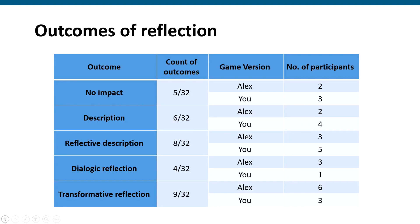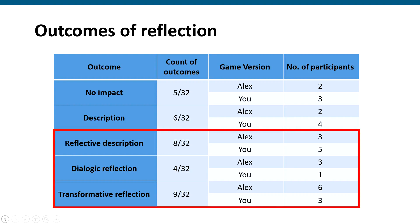Looking at the outcomes of reflection — the key ones are highlighted in red. According to Fleck and Fitzpatrick's hierarchical framework, levels of reflection increase in complexity and depth as you go higher. Two-thirds of our players experienced reflection of some kind, and there's a suggestion that players who engaged with the Alex version had a more in-depth experience of reflection, including reflective description, dialogic reflection, and transformative reflection where it actually impacted how they think or behave outside of the game.